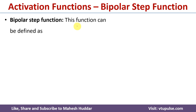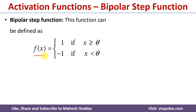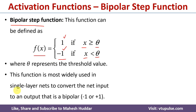Similar to the binary activation function, we have another step function known as the bipolar step activation function. In this case, we again have two outputs — one is 1 and another one is minus 1. The bipolar step activation function equals 1 if the calculated net input is greater than or equal to some threshold value, and it equals minus 1 if the calculated net input is less than the threshold value. Whenever we are expecting two outputs, that is minus 1 and plus 1, we can go with bipolar step activation function. It is most widely used in single layer neural networks.